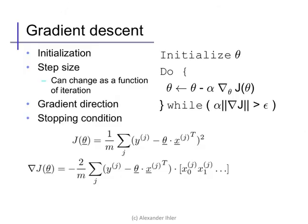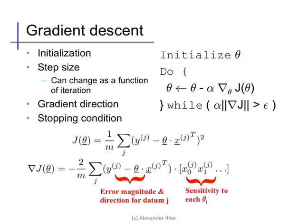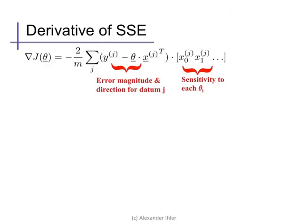The gradient value has an intuitive interpretation, the product of one term that measures the error magnitude and its direction. So how much error have we made on data point j, and which direction should we go to decrease it. And another term over here that indicates how fast our error changes if we change one of the parameters, say theta zero or theta one. So this term was the derivative of e with respect to theta. Since we're interested in taking a very small step, we should go in a direction that will have a large impact on the error. So this is measuring the sensitivity of the error to each parameter, theta i.